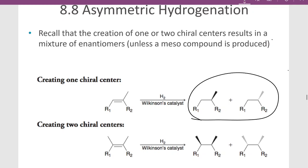Remember, if we had hydrogen in the presence of Wilkinson's catalyst, or even platinum, palladium, or nickel, we could add hydrogen across a double bond. If we create a chiral center, then we're going to get a mixture of enantiomers. If we create two chiral centers with the same process — hydrogenation with Wilkinson's catalyst or platinum, palladium, or nickel — then each of the hydrogens adds syn.